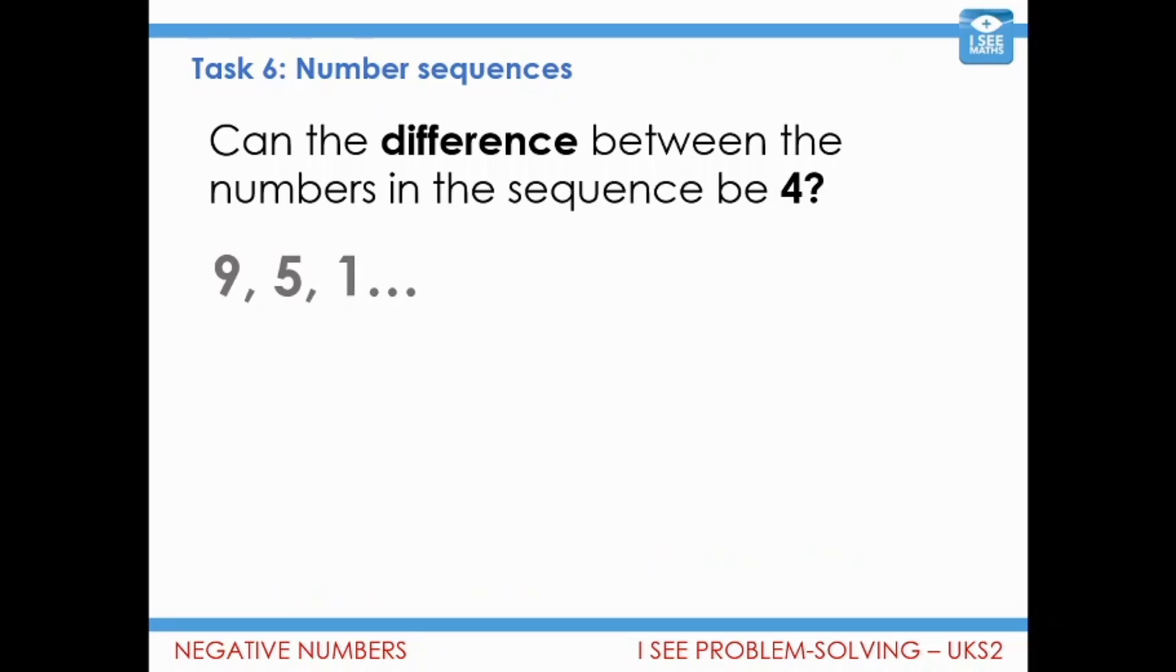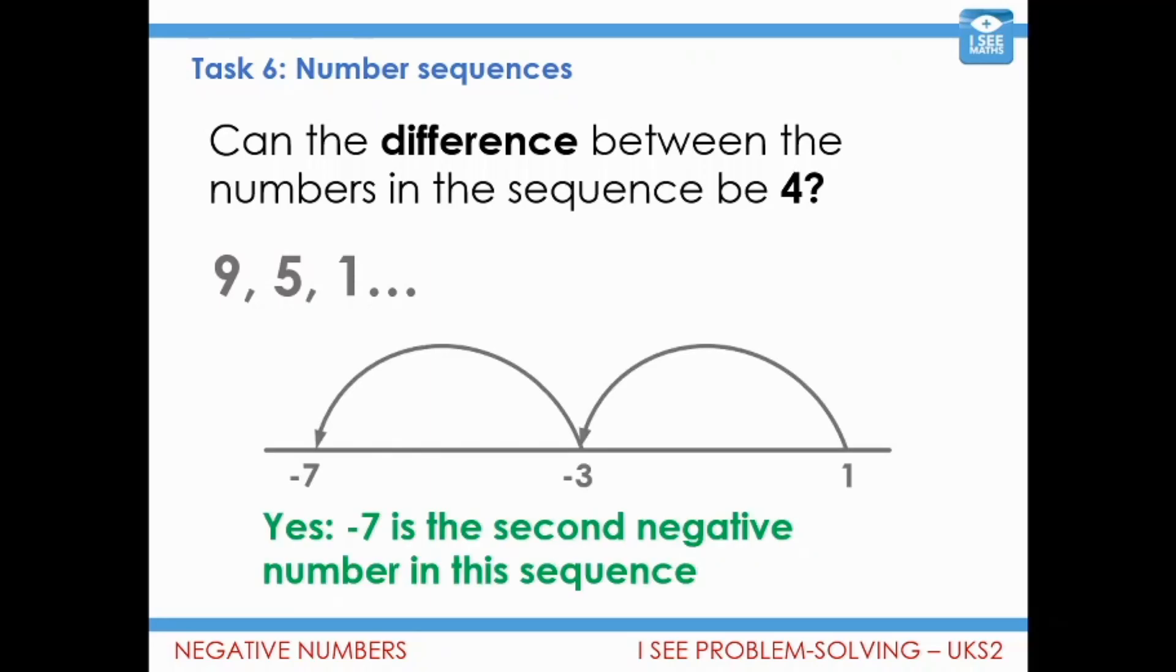Well, could the sequence be going down in fours? Will this work? Let's have a look. Yes, because we have one, then it'd be minus three, and then it'd be minus seven. So there's one possibility.